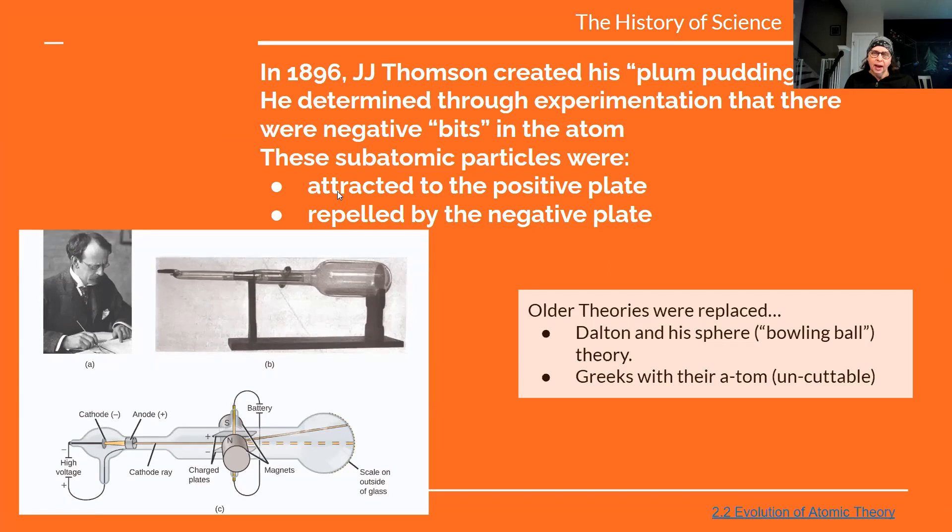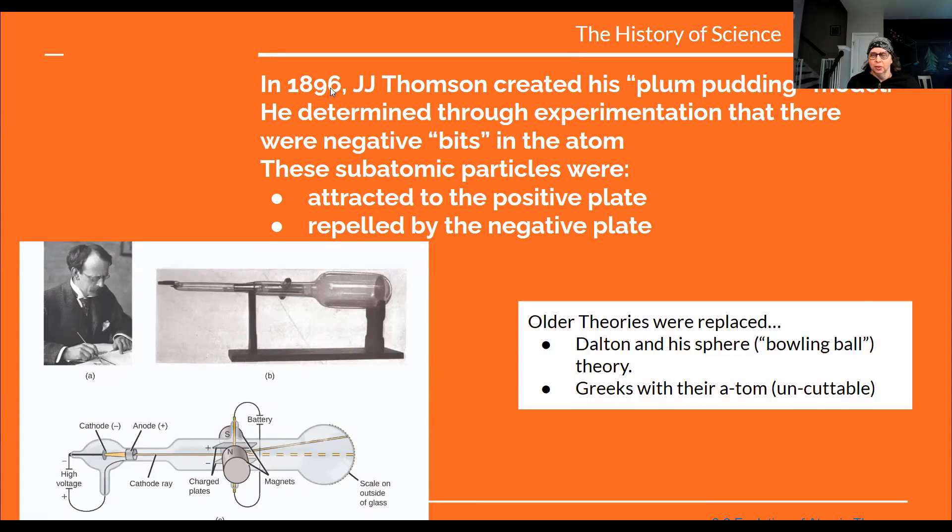What this did do is kind of said that Dalton's theory that it was just basically like a bowling ball, a solid sphere, was incorrect. The atom was in fact made up of these smaller particles. It also replaced what the Greeks' knowledge was. They thought the smallest item was uncuttable, and now we know there's a couple little pieces in there. We don't want to split it open, but there's a couple pieces in there.